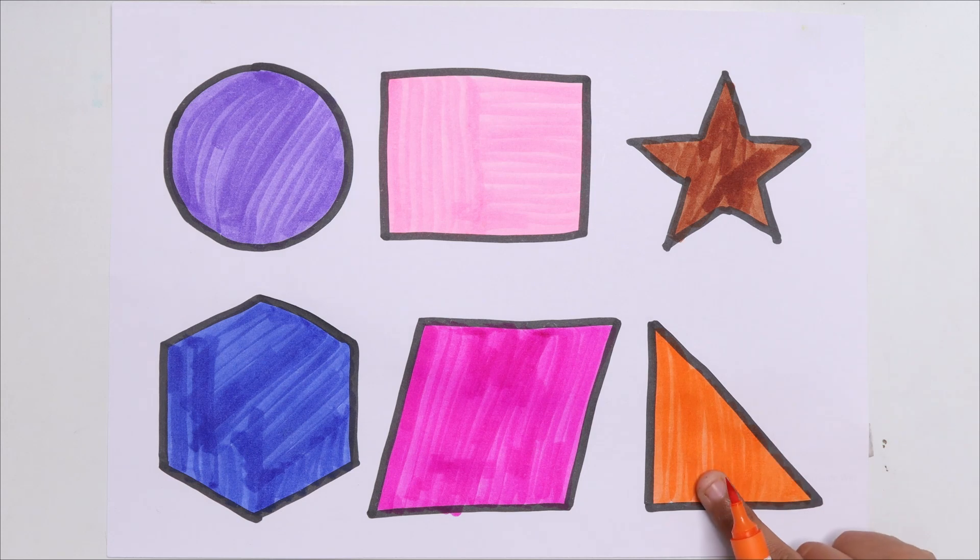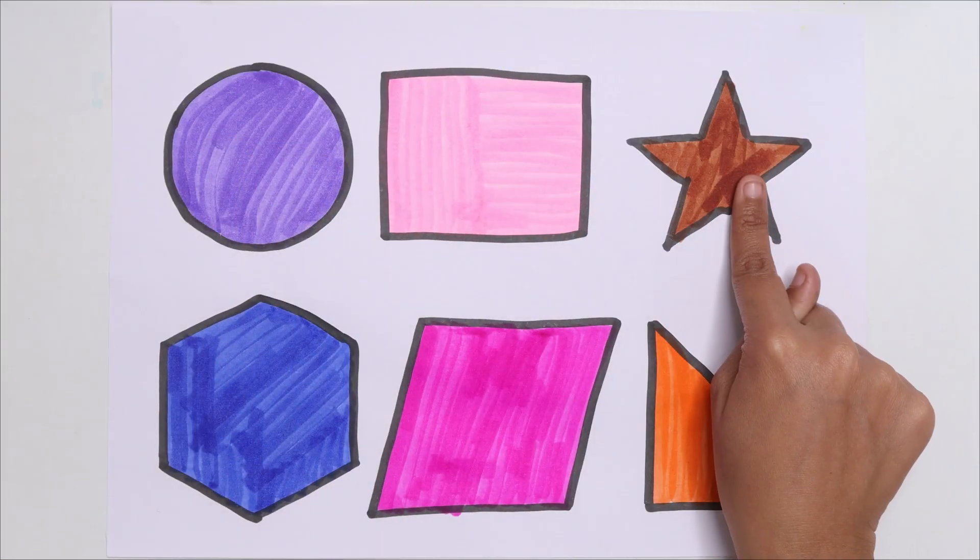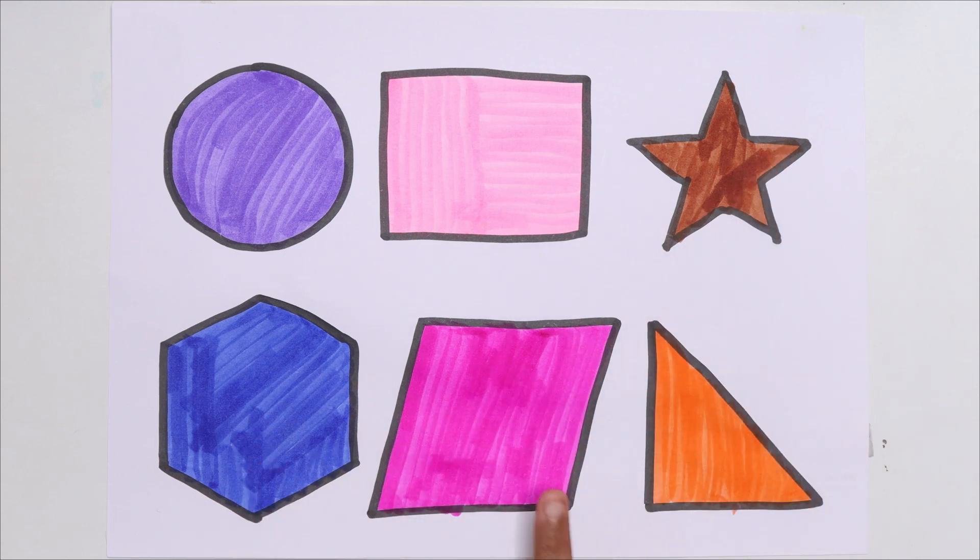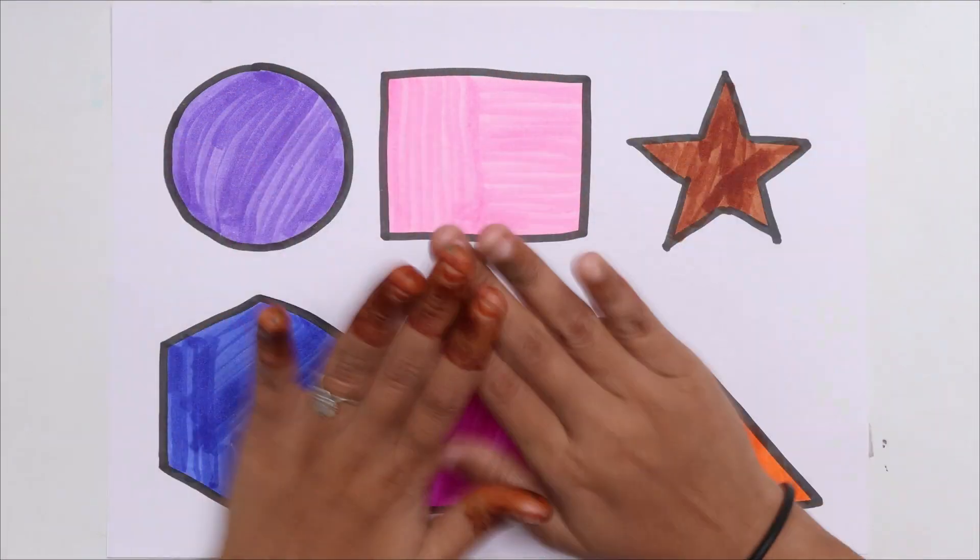Right triangle, circle, square, star, hexagon, parallelogram, right triangle. Thank you for watching the video. Don't forget to like and subscribe. Bye bye kids.